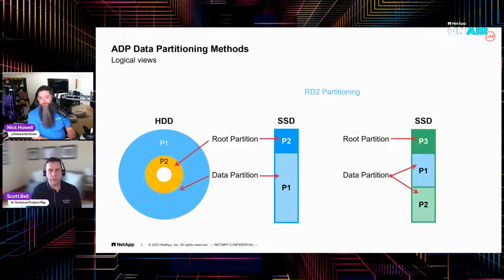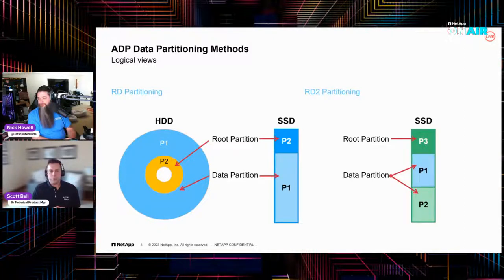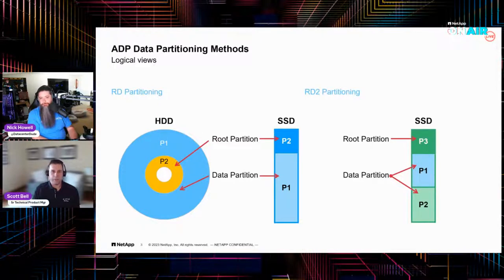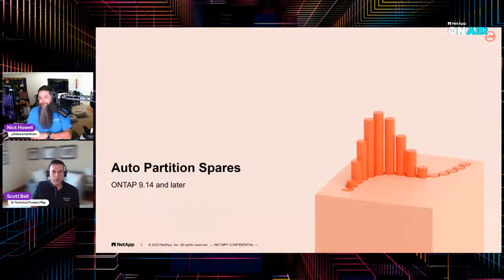I'm a visual kind of guy. I like pretty pictures because they help illustrate concepts that are simple. With regards to RD2 partitioning or RD partitioning, this is a rough idea of what it actually looks like. Especially with spinners, you see that the root partition is closer to the center and the data partition is closer to the outer edge — why? Outer edge spins faster. Whereas SSDs — well, they're SSDs, they're going to be lightning fast no matter what.